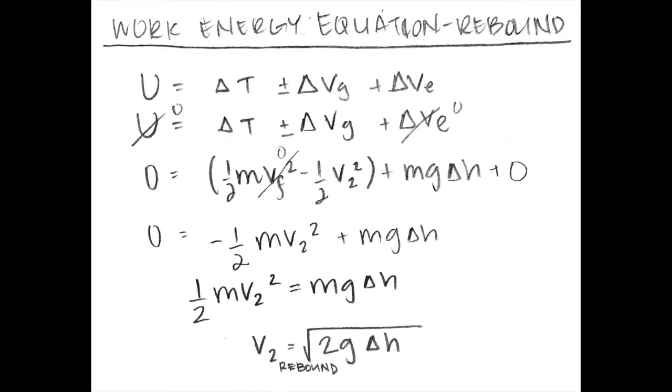Next, to figure out the rebound velocity of the tennis ball, use the same conservation of energy equation, but this time we know the final velocity will be zero since the ball is at its peak. Solve again for v2 and you have the rebound velocity of the system.